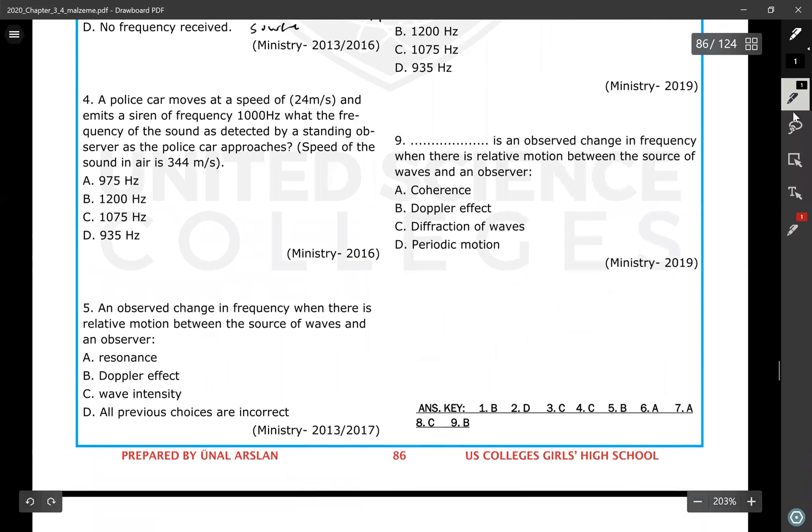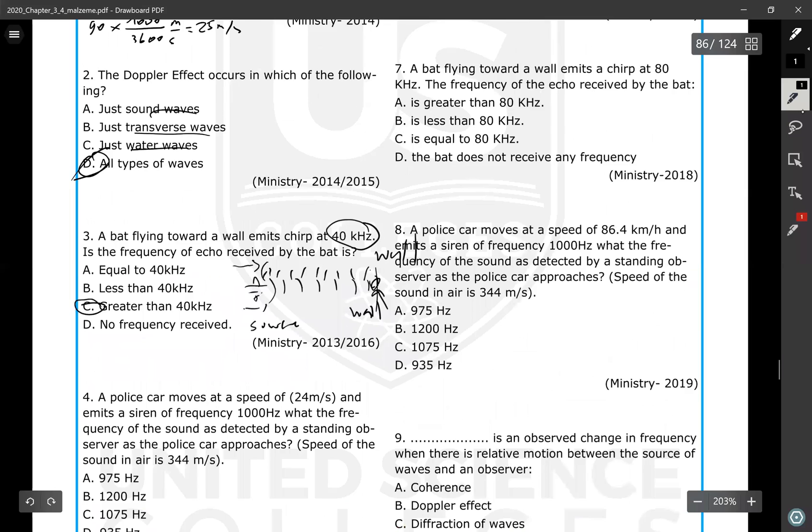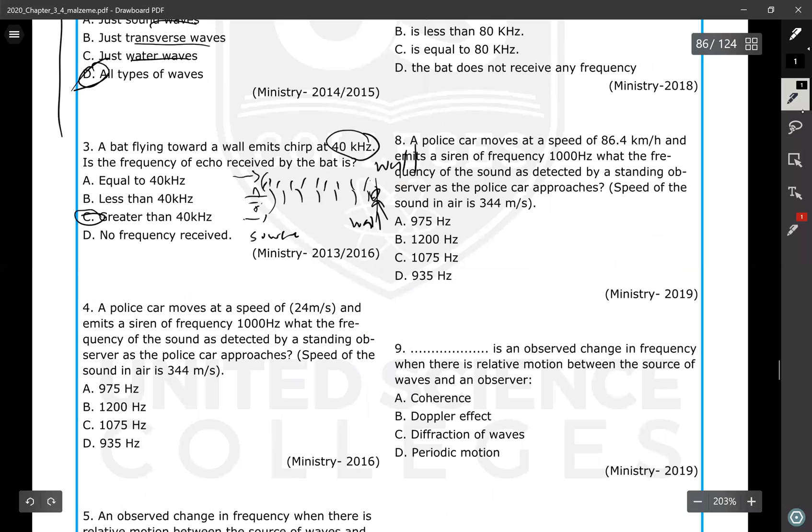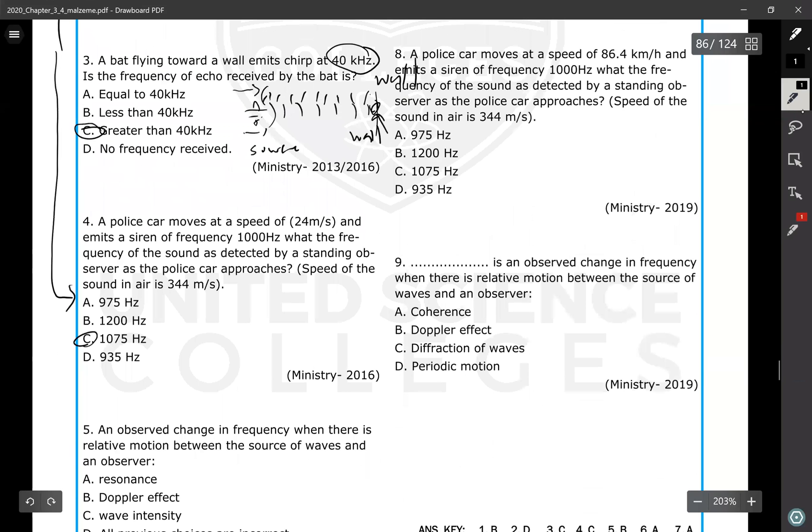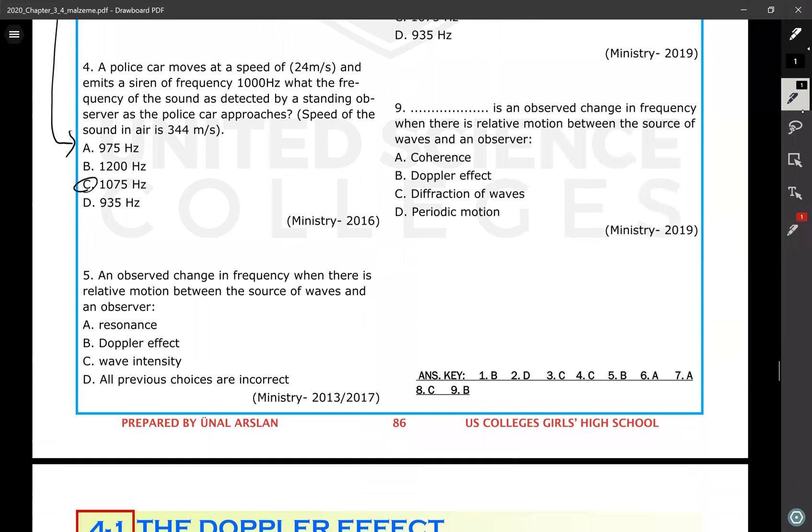A police car at a speed of 24 meter per second emits a siren of 1000 hertz. What is the frequency of the sound as detected by a standing observer? It's exactly the same as the first problem. I am not going to solve it. First and fourth are the same problem. You are going to get the answer as C. In the first problem it was 1080, and in here it is 1075. Again, it approaches - everything is the same.